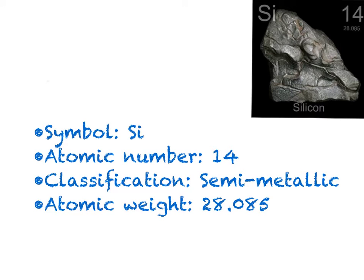It looks like Kanish has a question. Let's see what it is. Aditya, could you tell me the basic information that we can get from the periodic table about silicon? Well, the symbol for silicon is Si, and the atomic number is 14, or in other words, it is the 14th element on the periodic table. It is classified as a semi-metallic because it is on the right side of the table and underneath carbon. The atomic weight is 28.085.